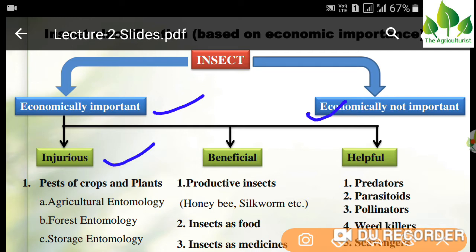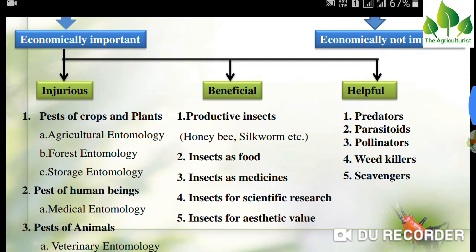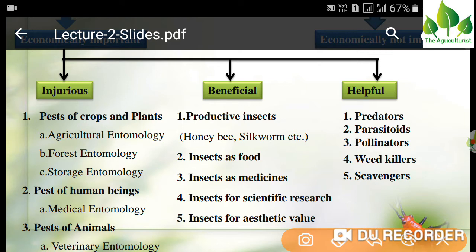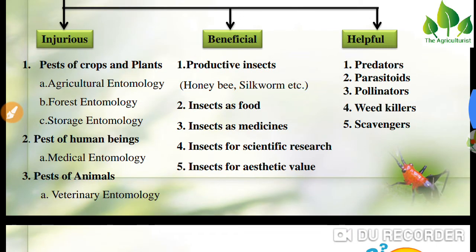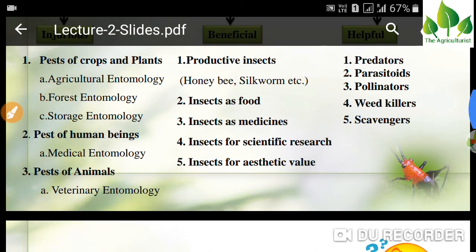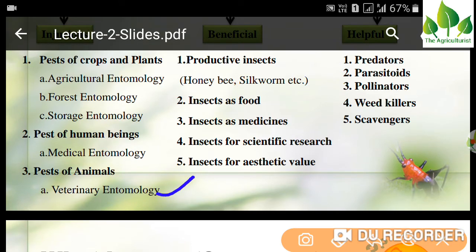Economically important insects are further divided into injurious and beneficial or helpful. Injurious pests include pests of crops and plants, like agriculture entomology, forest entomology, and storage entomology — the stored grain pest. The second category is pests of human beings, meaning medical entomology, and pests of animals, meaning veterinary entomology, in which ticks will come under this category.